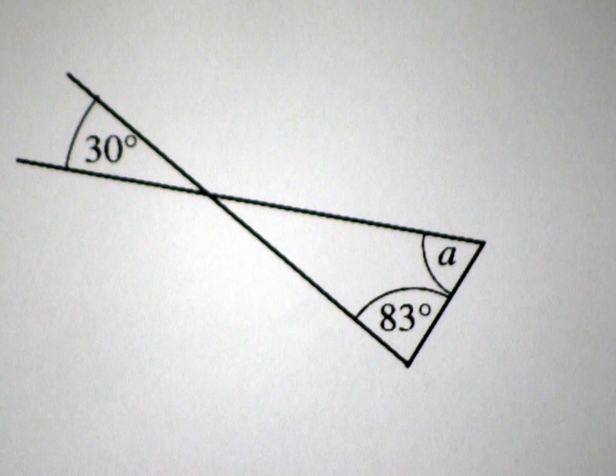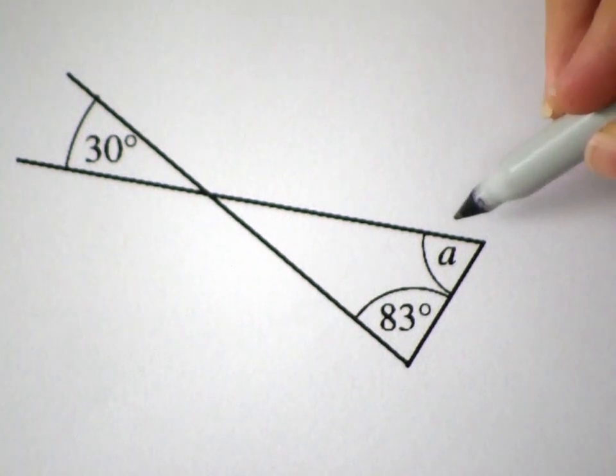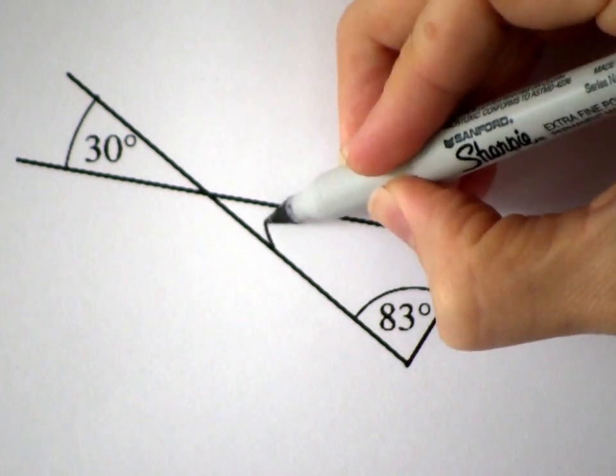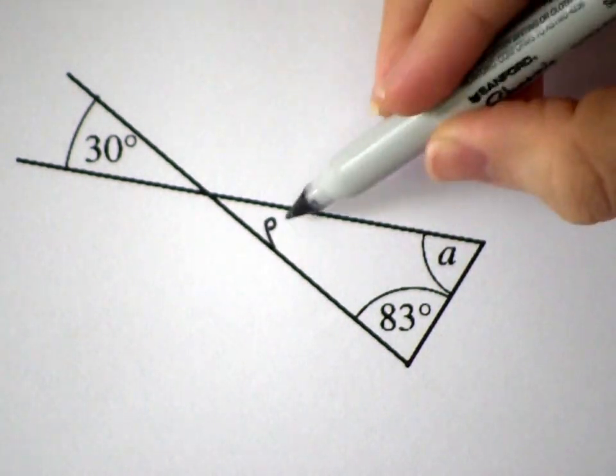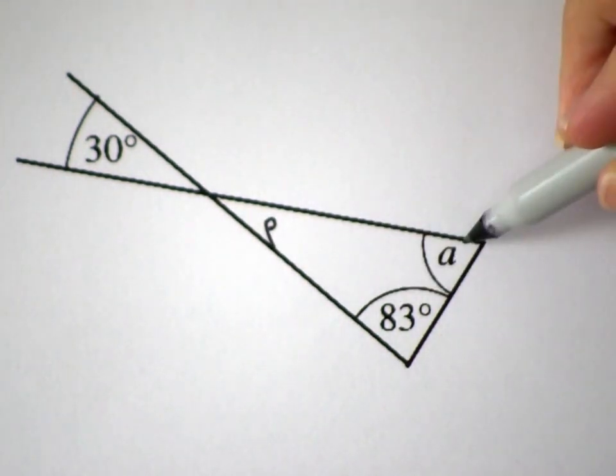How am I going to work out the size of angle A here? Well, if I knew this angle, let's call it P, I could use P and 83 degrees to work out A.